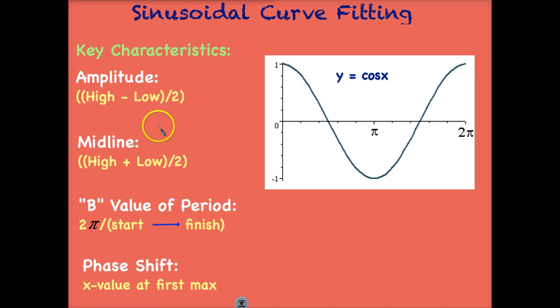So if we take our high here this is 1 and then we subtract our low which is negative 1 and then we divide all this by 2. 1 minus the negative 1 becomes 2 and 2 divided by 2 is 1. And we know that our amplitude is in fact 1.